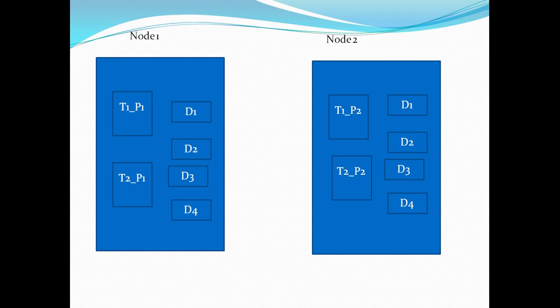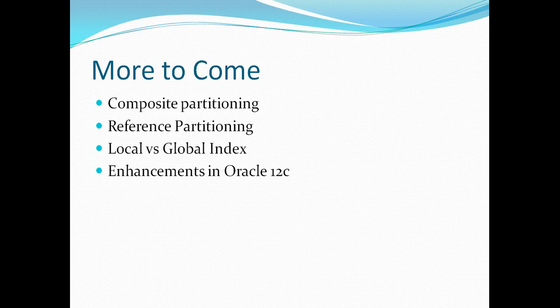That was it for hash partitioning. If you have any questions, drop a comment and I will clarify as soon as possible. There is still more to come: we will discuss composite partitioning, and if you are clear on list, range, and hash partitioning, composite partitioning will be straightforward. Then we will cover reference partitioning — where child and parent tables are partitioned on the same key — followed by local and global indexes in further detail, and finally enhancements Oracle made in 12c for partitioning and local and global indexes. Thanks for watching, and if you have not subscribed, please go ahead and do it now.